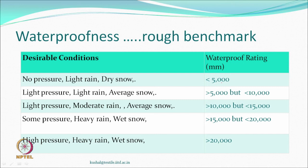Some benchmarks: the water head in millimeters that a fabric can support before it leaks. For a waterproof material where there is hardly any pressure - a light rain or very dry snow - you may have less than 5,000 mm of water head. If there is more rain or water collected in a fabric trough, you may require in the range of 5,000 to 10,000.